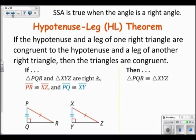The hypotenuse leg theorem says that if the hypotenuse and a leg of one right triangle are congruent to the hypotenuse and a leg of another triangle, then the triangles are congruent.